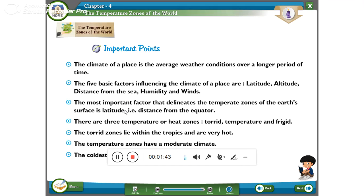The torrid zone lies within the tropics and is very hot. The temperature zone has a moderate climate. The coldest zone is called the frigid zone.